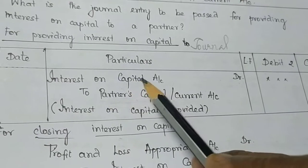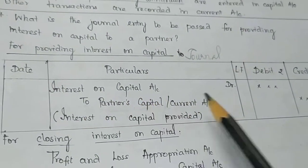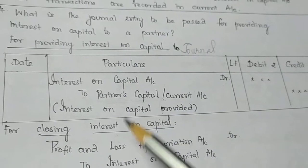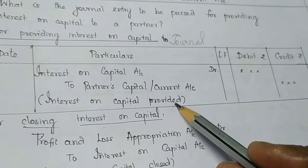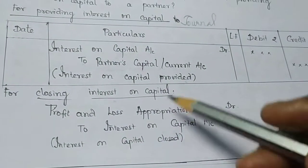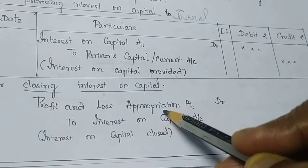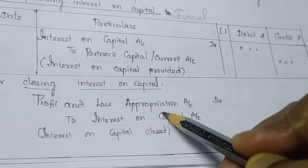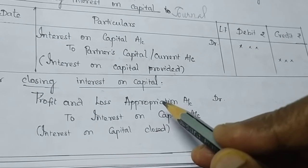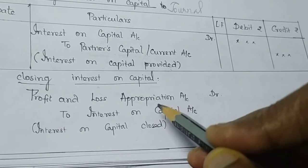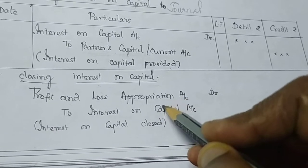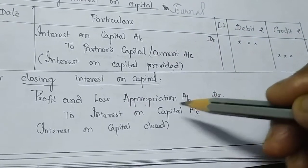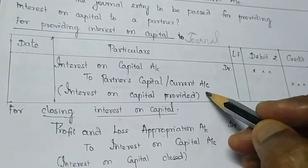Interest on Capital is debited to the Partner's Capital or Current Account when provided. Then it is closed to the Profit and Loss Appropriation Account. Interest on Capital is already debited; now credit comes from Profit and Loss Appropriation Account. Partners' expenses — salary, commission, interest on capital, and drawings — all are adjusted through the Profit and Loss Appropriation Account. This question is worth 2 marks.